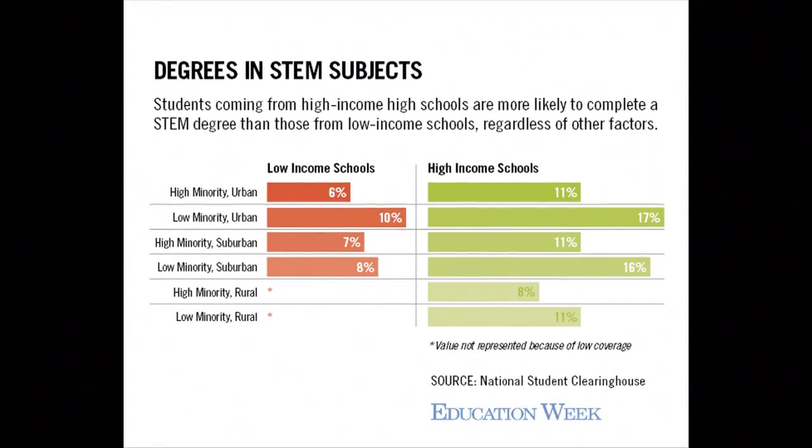In a 2014 study conducted by ACT, statisticians found that all students, regardless of their socioeconomic status, demonstrate the same interest in science, technology, engineering, and math — the STEM field. However, despite the same level of interest, a 2012 study conducted by the National Student Clearinghouse found that only six to seven percent of students coming from high-minority and low-income areas go on to pursue a STEM degree, as compared to 16 to 17 percent of students coming from low-minority, high-income areas. So what is the root of this disparity between interest and achievement?